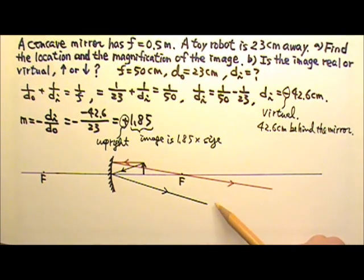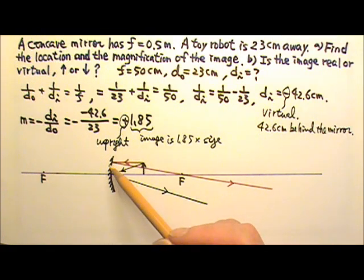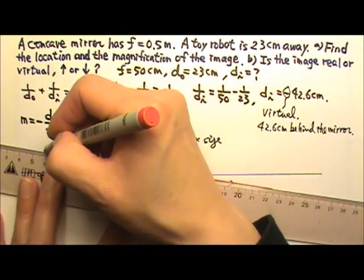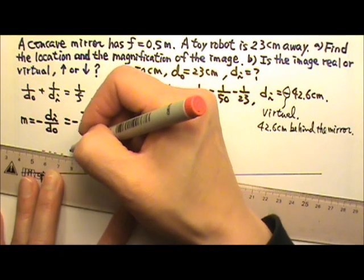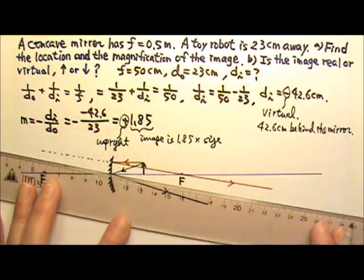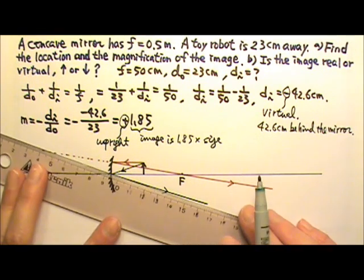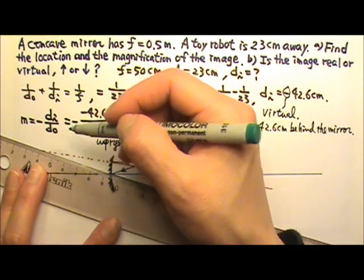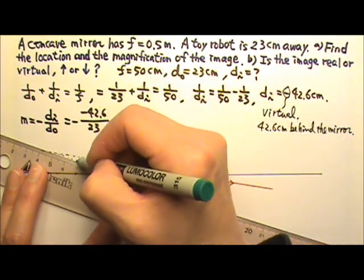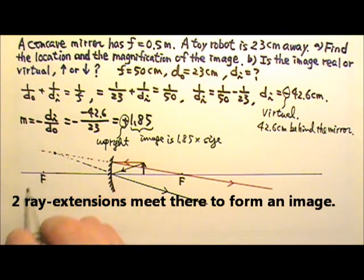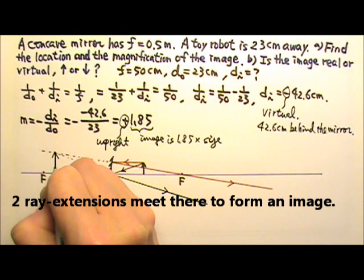As we can see that these two rays, they will never meet. However, their extensions can meet and form an image on this side. So if I draw the ray extension, this one would go back to here. And the green one will go to here. And the two rays will meet right here forming an image that is upright.